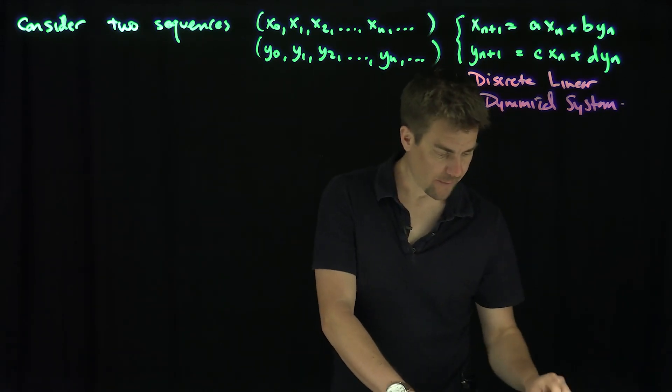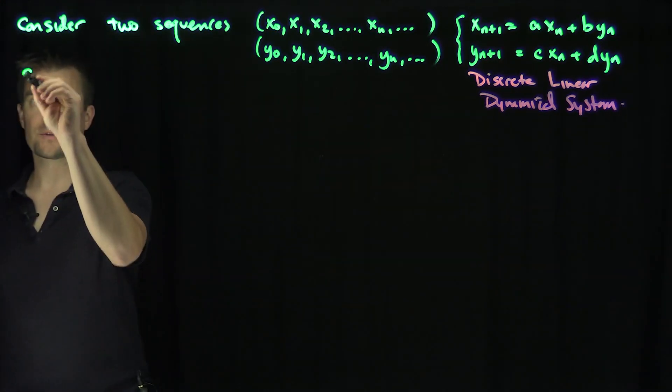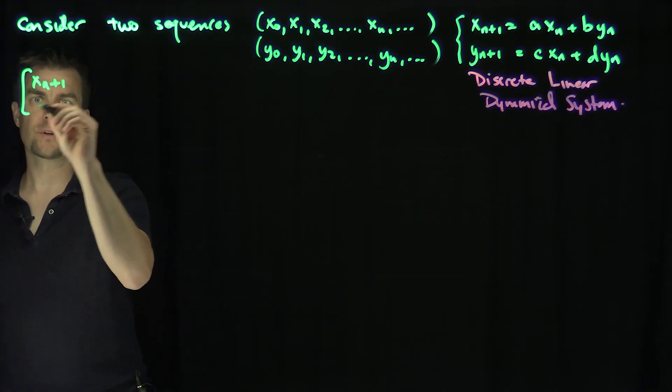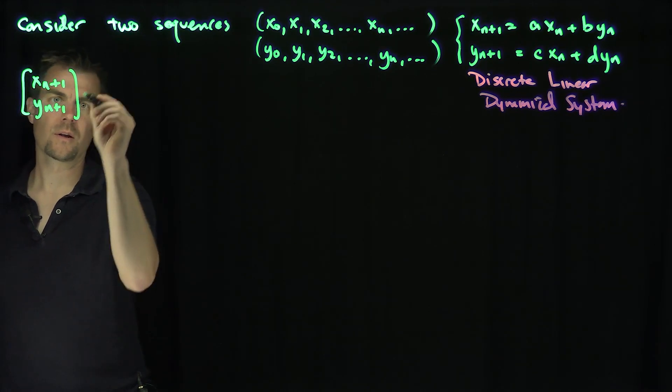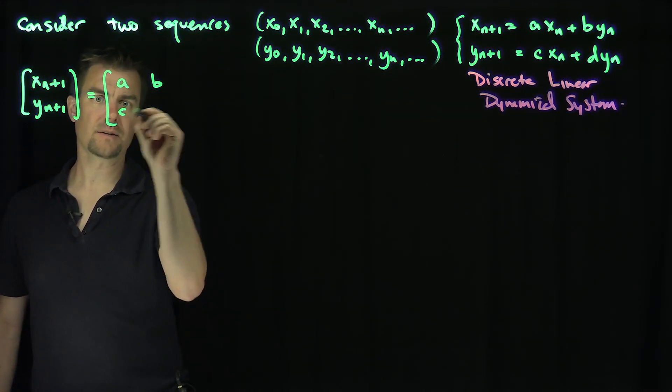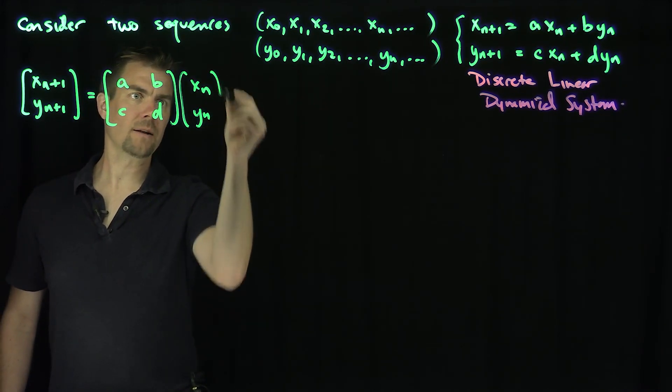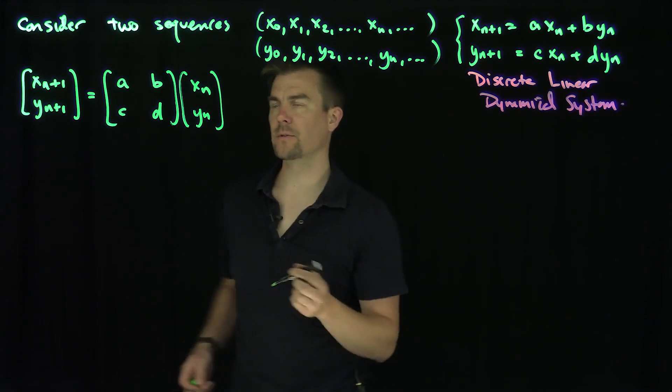And so what we're going to do is take this discrete dynamical system and write it as a matrix equation. So I'm going to write this as xn plus 1, yn plus 1 is equal to the matrix A, B, C, D times xn, yn. So this exact structure can be written as a matrix equation.